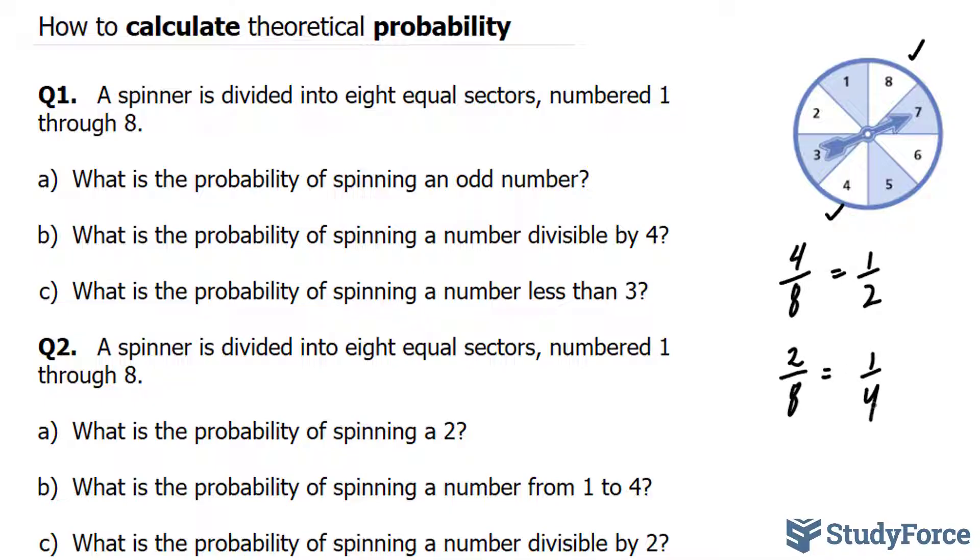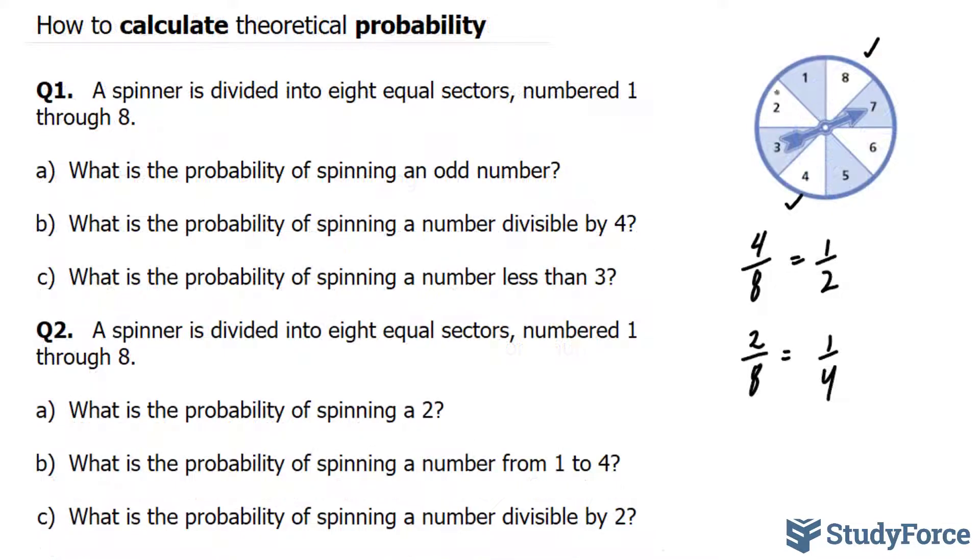a quarter. And lastly, what is the probability of spinning a number less than three? We have two possibilities, either two or one. Therefore, two out of eight gives us a quarter.